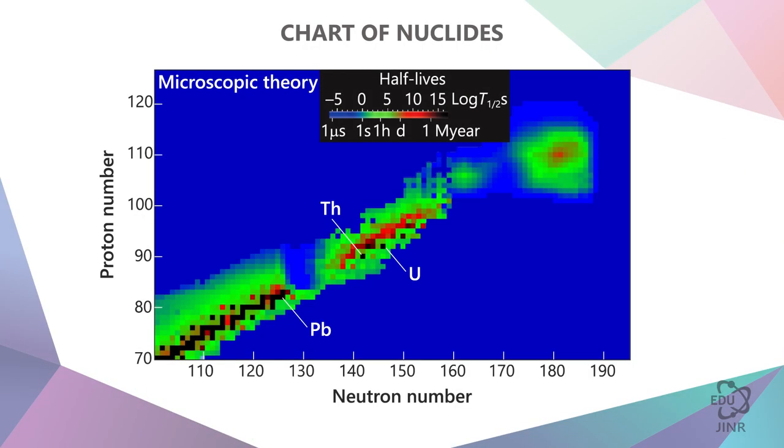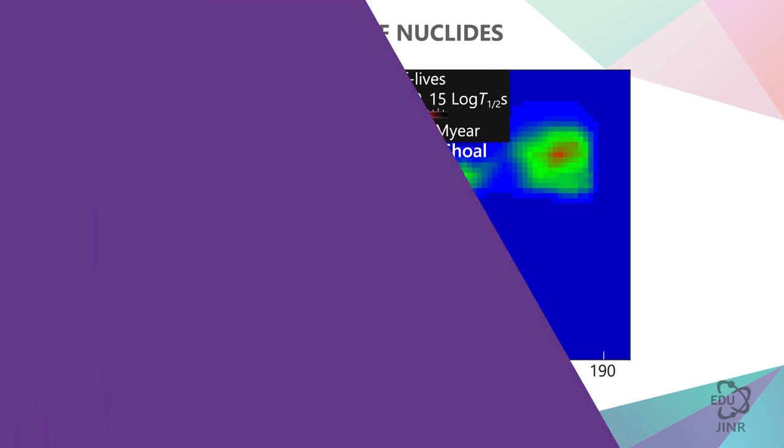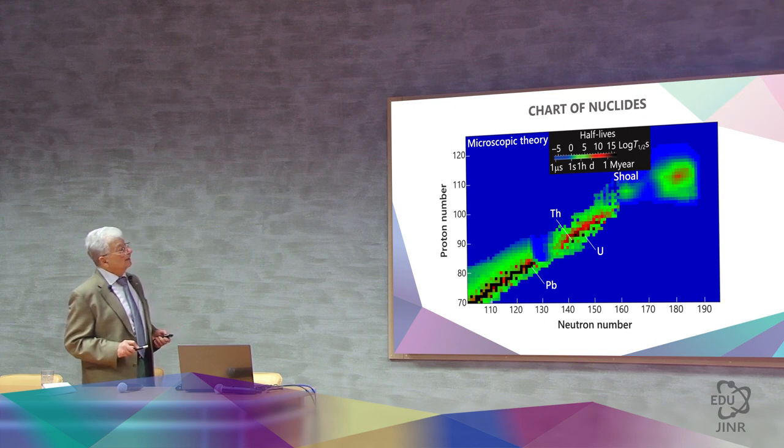And here we have a different graph. Here again is lead, here is uranium and thorium. But some formations have already started appearing here, a kind of sandbank, and a large zone of very heavy, or as we call it, super-heavy elements. It forms the so-called island of stability.